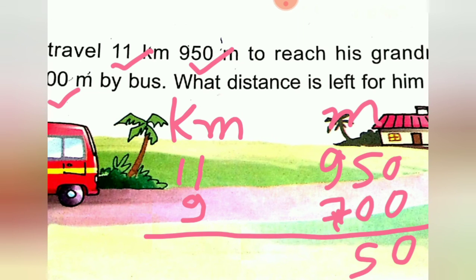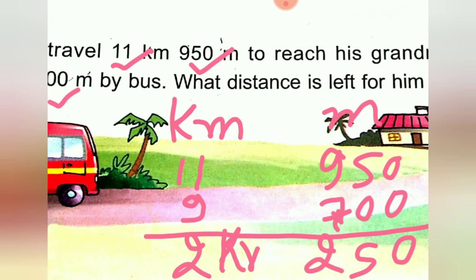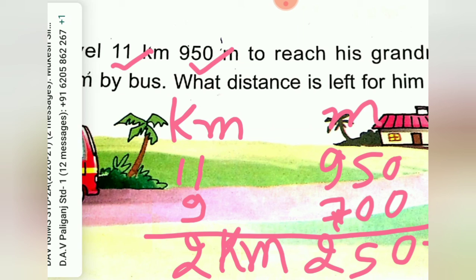Subtracting: zero minus zero is zero, nine minus seven gives two, and eleven minus nine gives two. So the result is two kilometer and two hundred fifty meter. That is how we solve word problems related to length. That's all for today — thank you, have a nice day, take care.